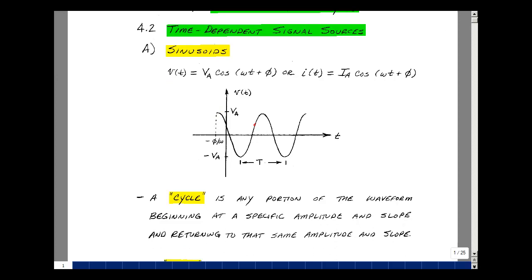Now, if you start at a point which has an amplitude and has a slope, and return to that same amplitude and slope, that's referred to as a cycle.